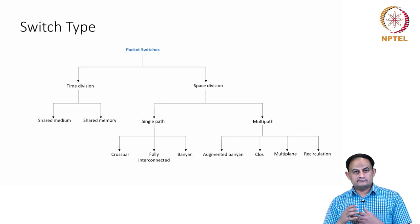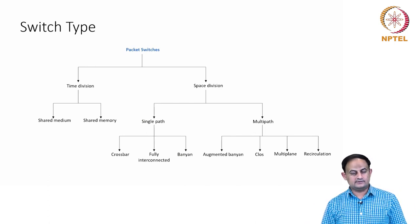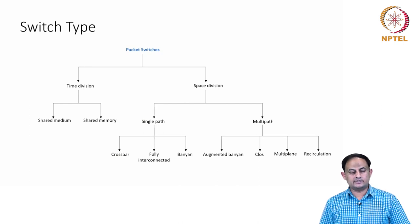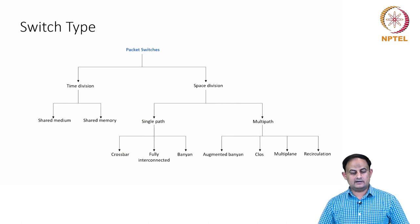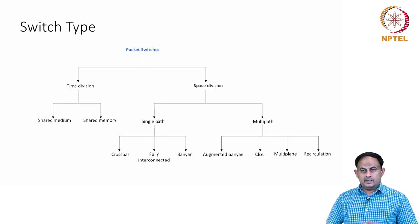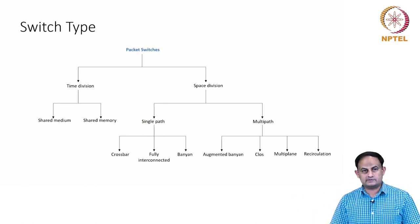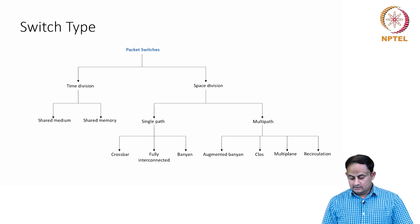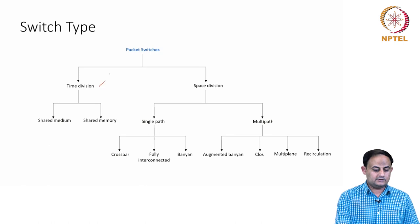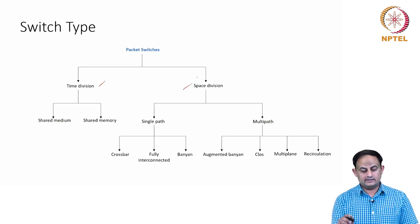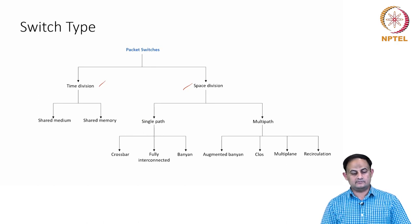After understanding some of the terminologies and the issues that can happen while doing switching and routing, let us spend some time understanding the different architectures or design strategies available for designing switches. Packet switches, or the switch fabric, are broadly classified into two types: the first is called the time division fabric and the second is called the space division fabric.